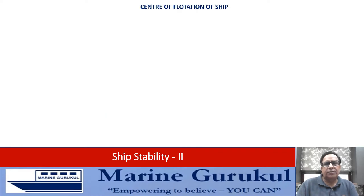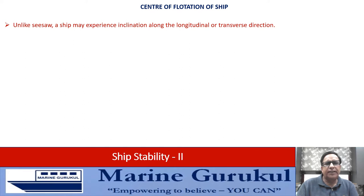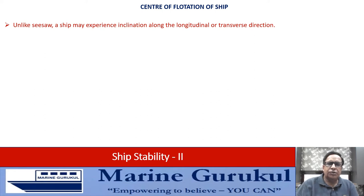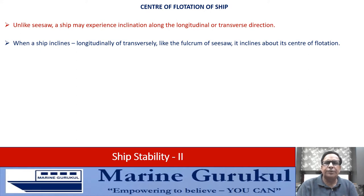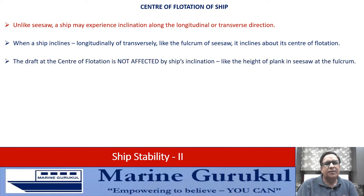Unlike a seesaw where the plank inclines only in one direction, a ship may incline longitudinally or transversely. When a ship inclines, whether longitudinally or transversely, there is a point like the fulcrum of the seesaw — the center of flotation. The ship inclines about its center of flotation, and the draft at the center of flotation is not affected by the ship's inclination, just like the height of the seesaw plank at its fulcrum.